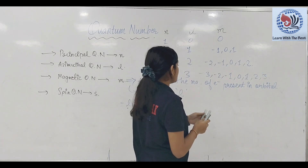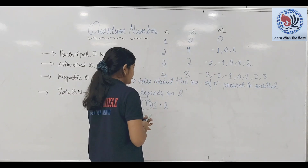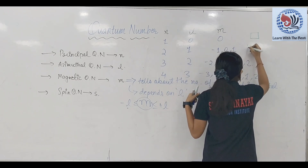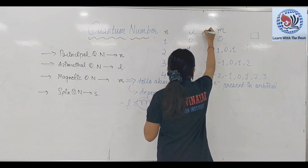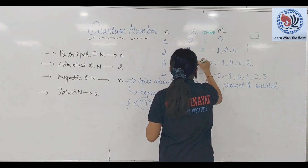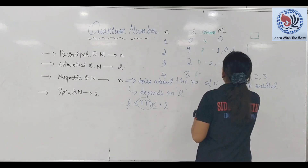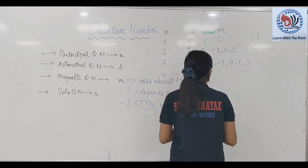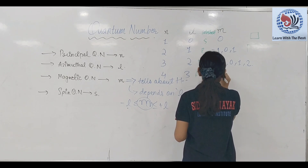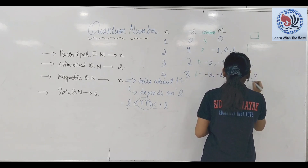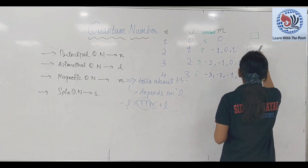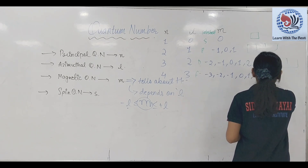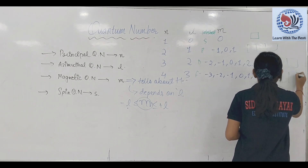As M tells about the number of electrons present in any orbital — यहाँ पर S में सिर्फ एक orbital होगी, P में 3 orbitals होगी, D में 5 orbitals होगी, F में 7 orbitals होगी।